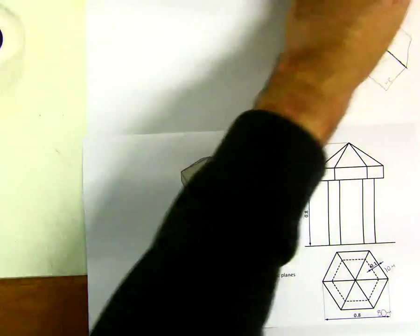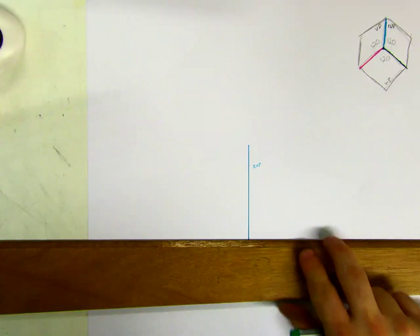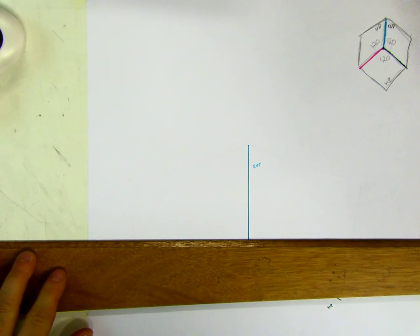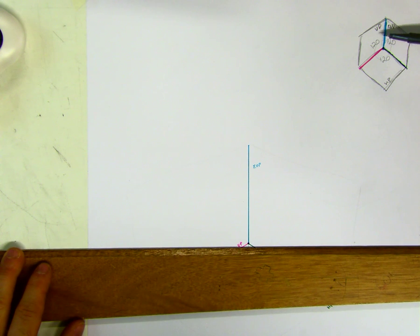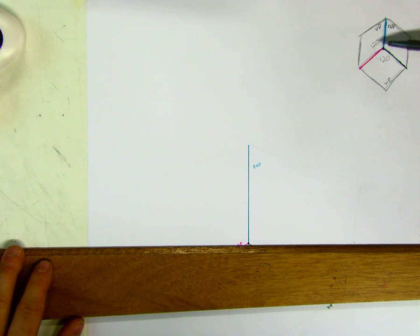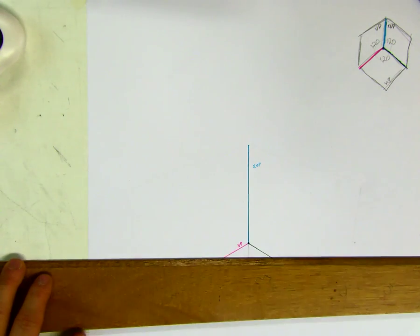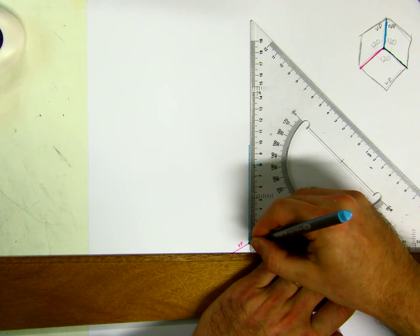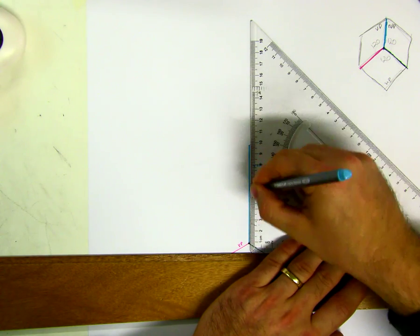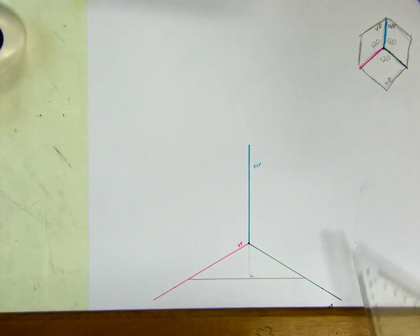The first thing we need to do is start off setting up our planes. My first axis is going to be where the vertical plane meets the end vertical plane, and that has to be vertical. So the first thing we do is set it up — make sure it's vertical. It doesn't matter how big it is at the minute, just don't make it too small. I've color-coded it blue and blue, so you can see there and there.